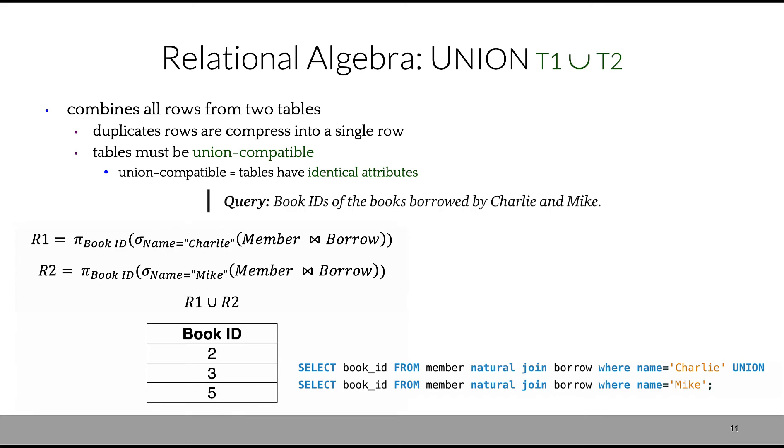Union—remember set theory? In union, we're combining all rows from two tables. We have one set, a second set, and we're combining both sets together—that's our union. One requirement for union is to have relations with identical attributes. For instance, our query: I would like to find book IDs for books borrowed by both Charlie and Mike. As a result, we end up with three records, but the most important thing is those two tables have the same identical attributes.